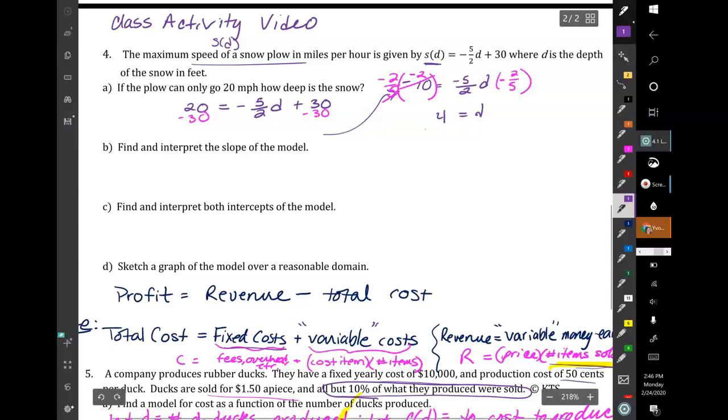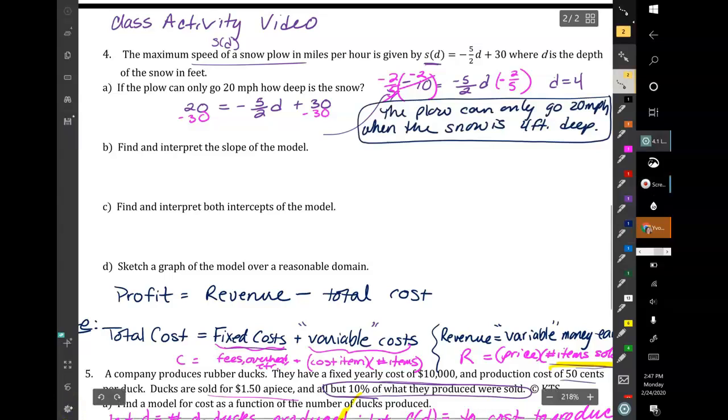So I would write in a sentence, let me just get this up over here. I might say something like the plow can only go 20 miles per hour when the snow is 4 feet deep. Okay, so make sure you get that part down that sentence here.